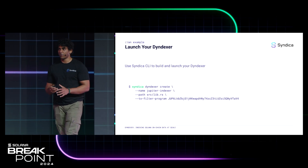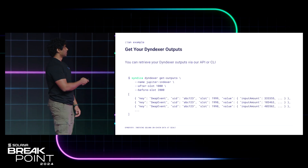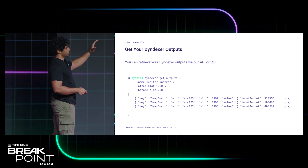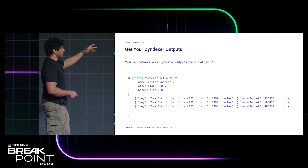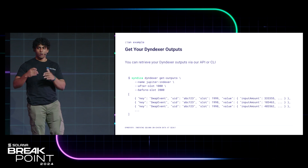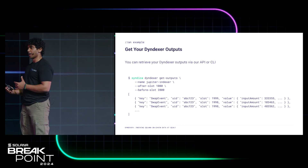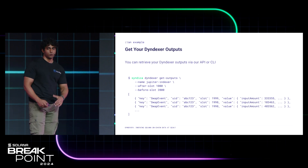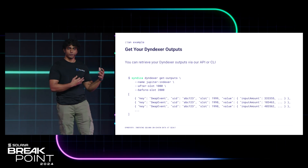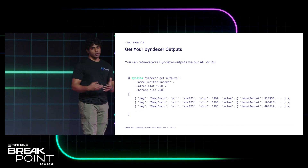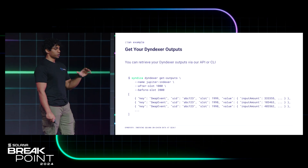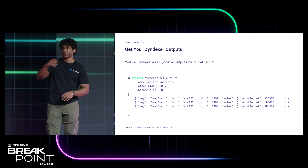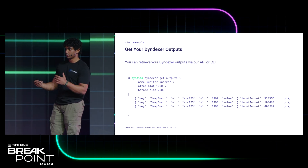Let's look at an example of how to pull that data. Using the Syndica CLI, you're able to get your outputs. You simply provide the name of the indexer you're interested in and can supply the slot range to specify which subset of data you're interested in. We also have an API if you want to write your own infrastructure around the indexer. You can also use our platform to see what your indexers are doing at any point in time — there's a nice graph showing all the events coming out and you can inspect them.